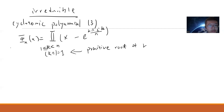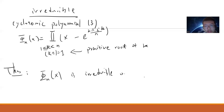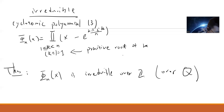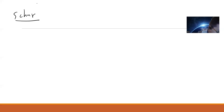The famous theorem is that φₙ(x) is irreducible over ℤ, or simply speaking, irreducible over ℚ — because it has integer coefficients. There are many kinds of proofs; you can find a paper called 'Several Proofs of the Irreducibility of Cyclotomic Polynomials.' In this video, let me just go with a simple, short one.